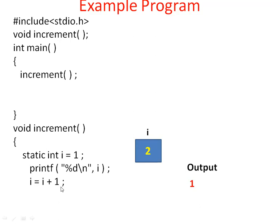Then the next statement i = i + 1 is executed, meaning i value will be incremented. Then the end of the function is reached. Once the end of the function is reached, the control leaves this function and goes back to the main function. At this point, this static variable is not removed from memory — it persists. Even when control leaves this function, the variable still exists in memory. Control goes back to main function.